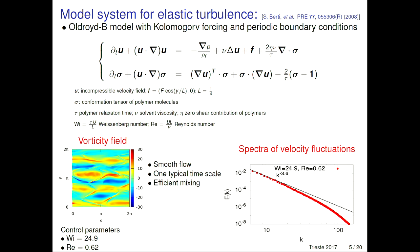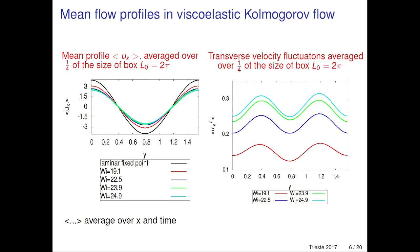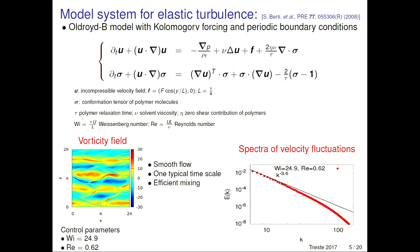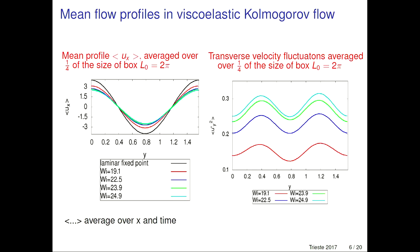Looking at an instantaneous snapshot of the vorticity field in the elastic turbulence regime, the flow is not laminar even when the Reynolds number is 0.62 — we have turbulent-like features. We also show a velocity spectra characterized by a power law decay with an exponent greater than 3, similar to experiments. Our flow is a spatially smooth flow, so we have typically one time scale. The viscoelastic Kolmogorov flow can be characterized by mean profiles: the mean base flow and the transversal component of velocity fluctuations. Importantly, the origin of these fluctuations is purely elastic — if there are no polymers in the flow, these fluctuations are zero. The symbols denote averages along the direction of homogeneity and time.